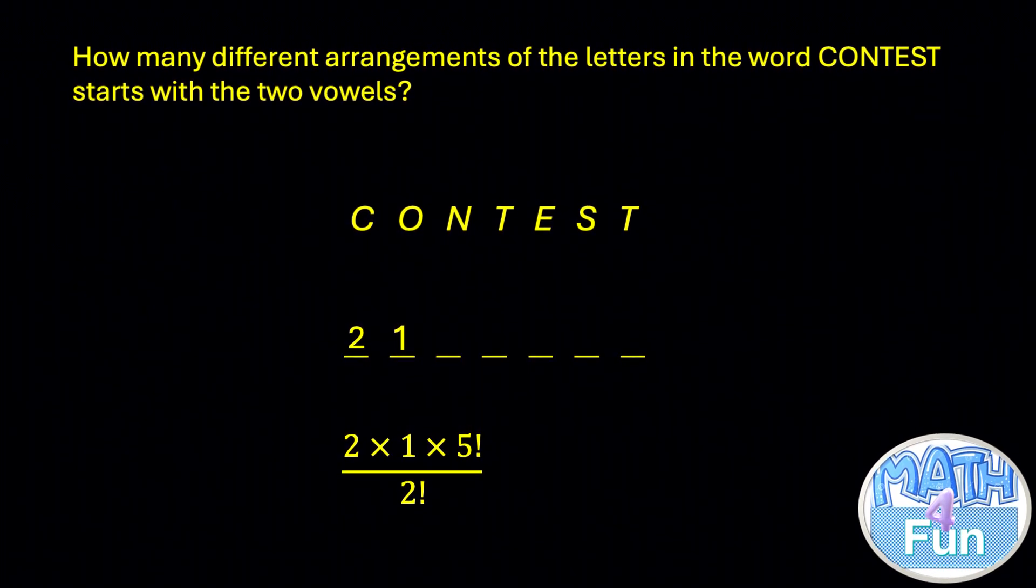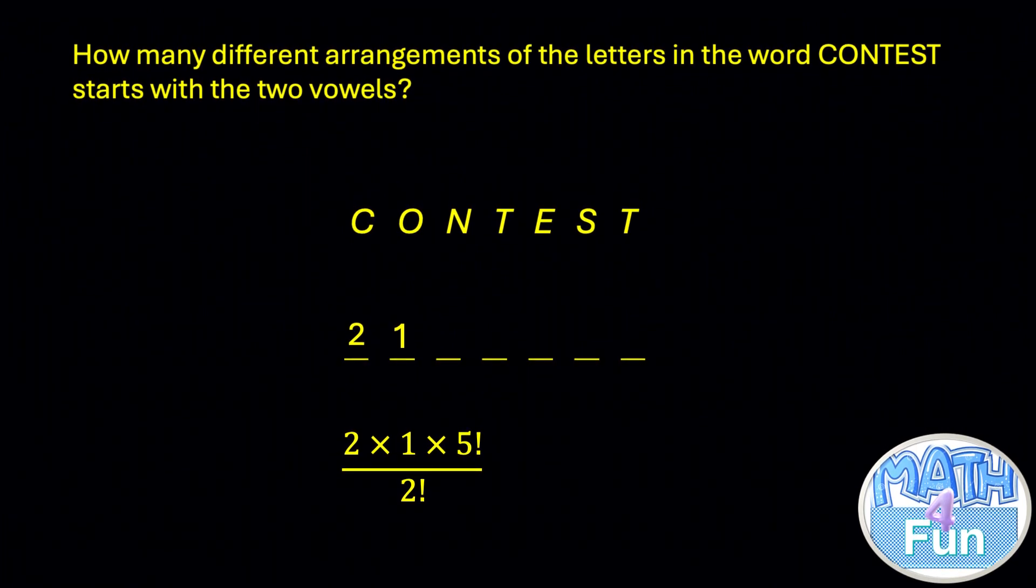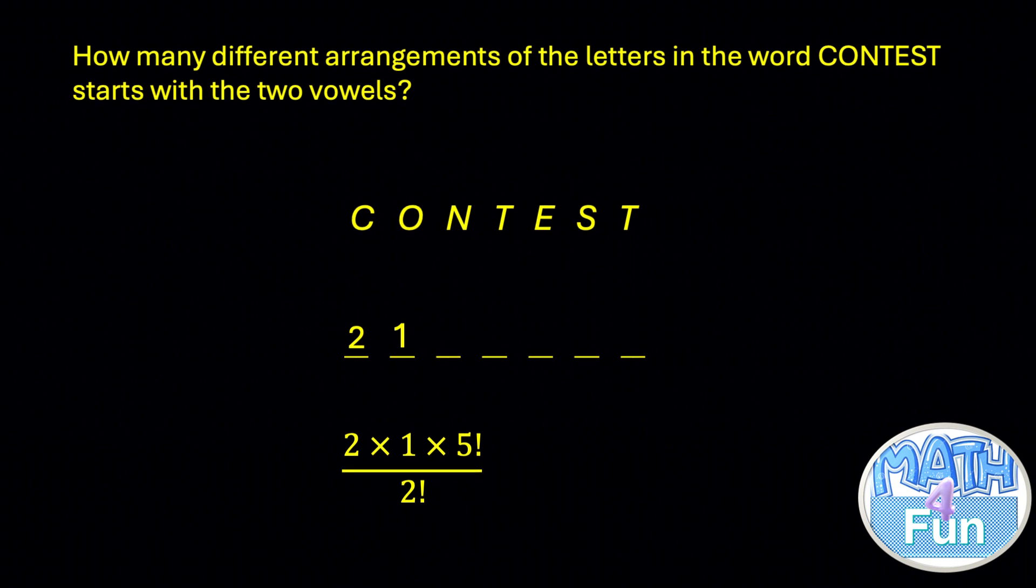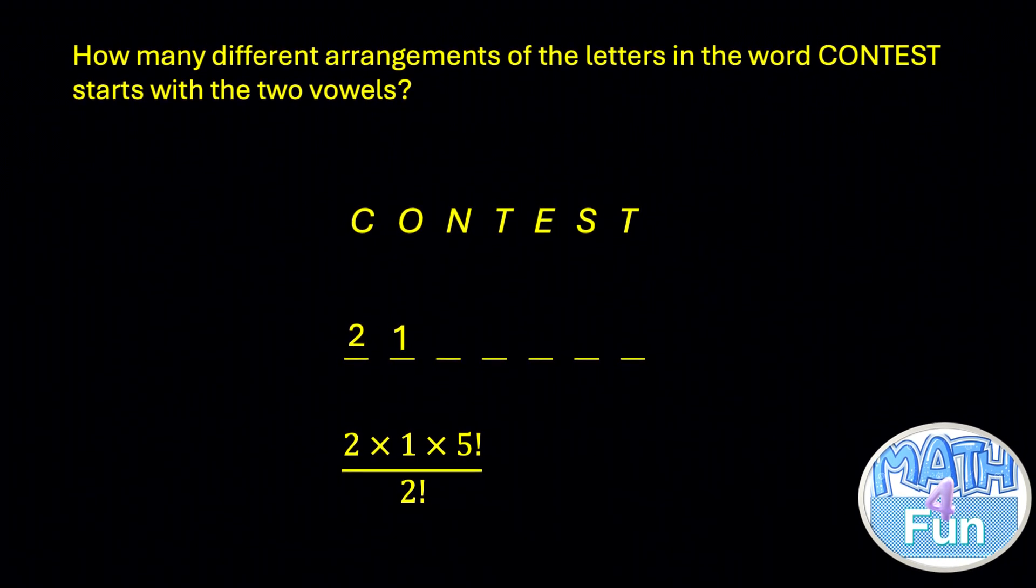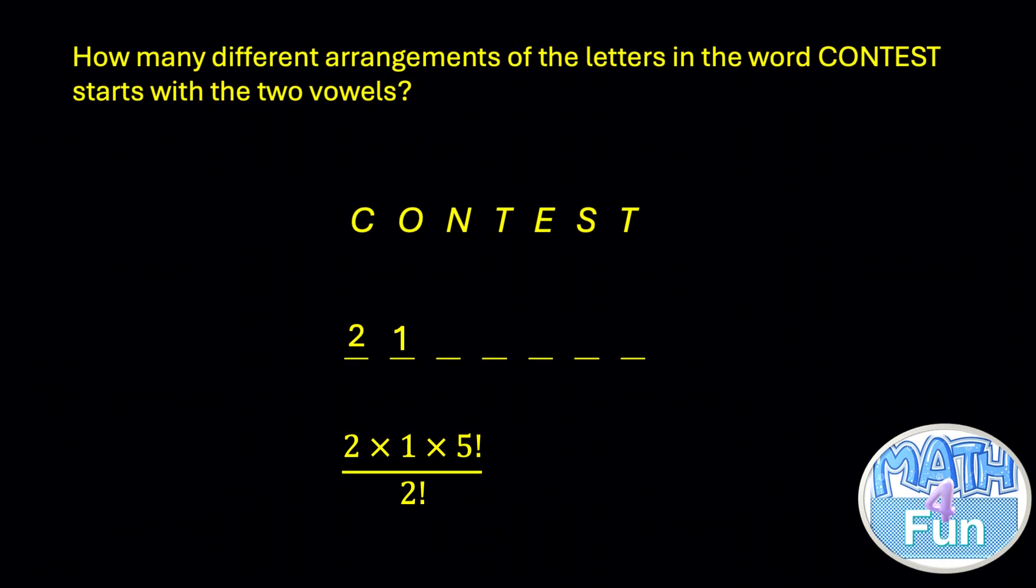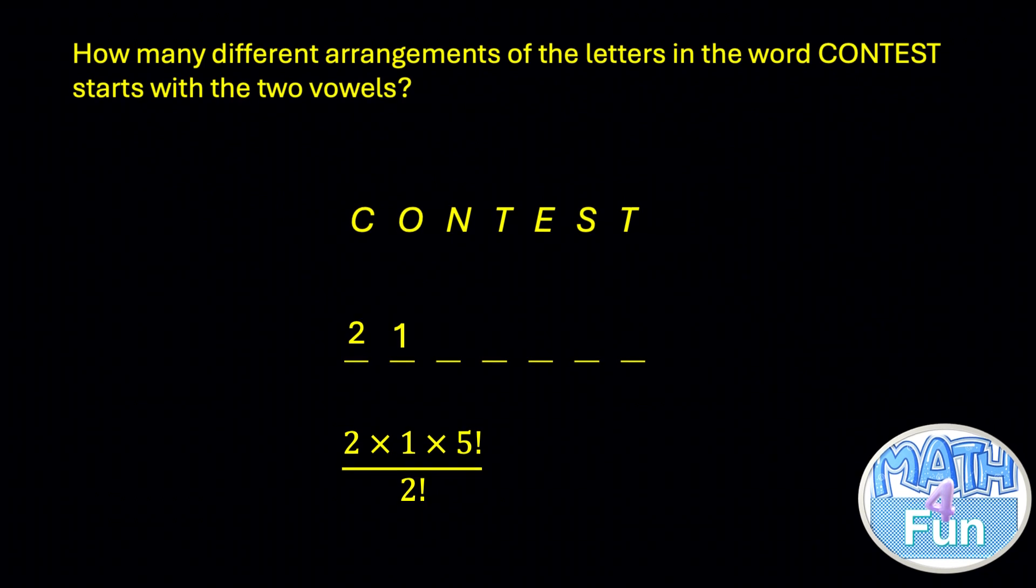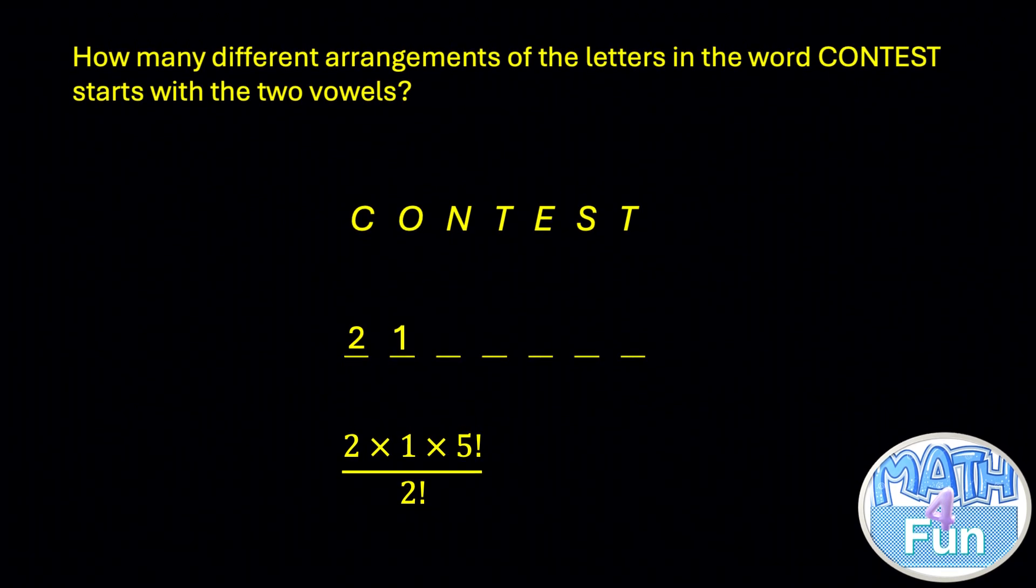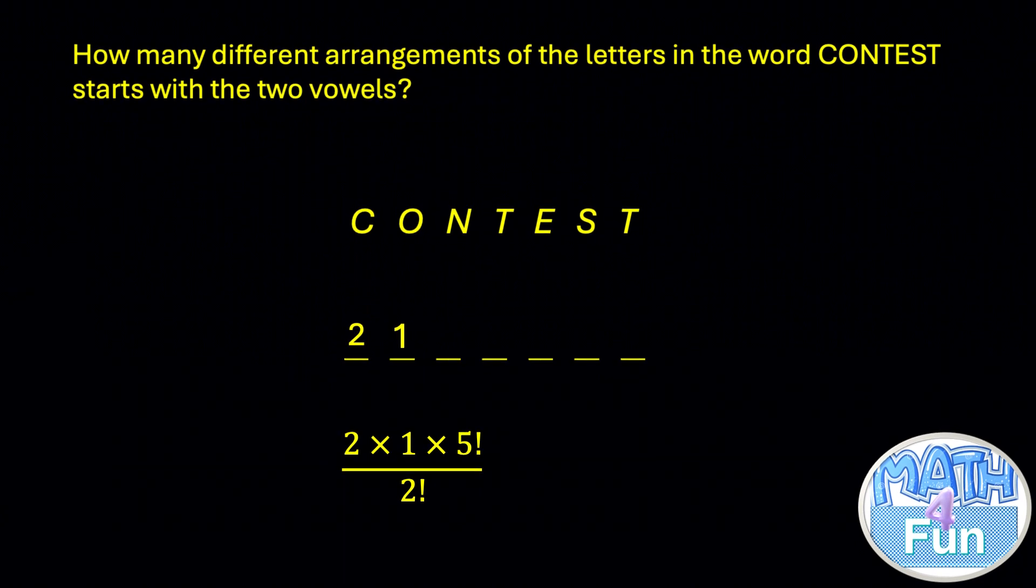So if the letter T is repeated three times, we divide by 3 factorial. Or if you have another letter repeated also, like C C N T T, we divide by 2 factorial and divide by 2 factorial again. Once the letter is repeated, count how many times it is repeated and divide by that number. Does it make sense for you?